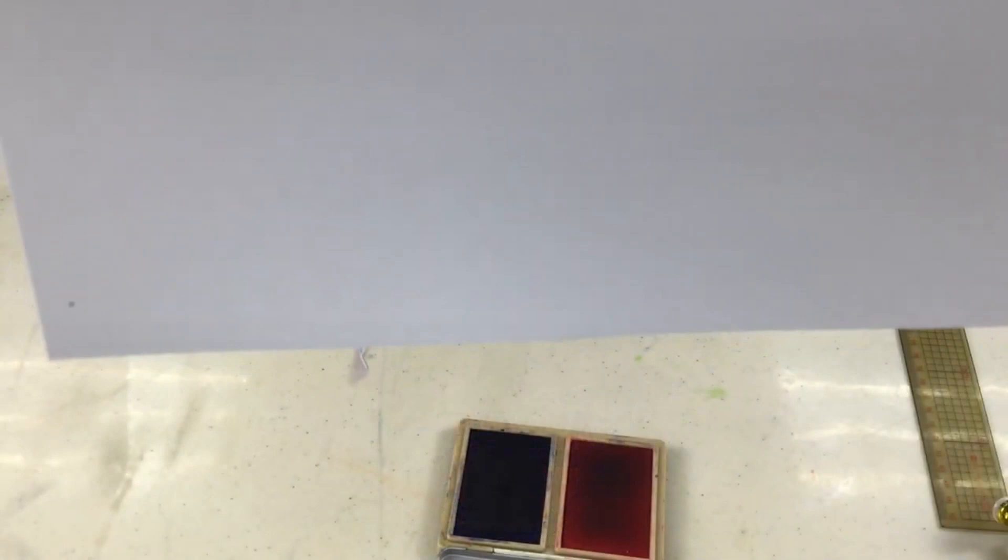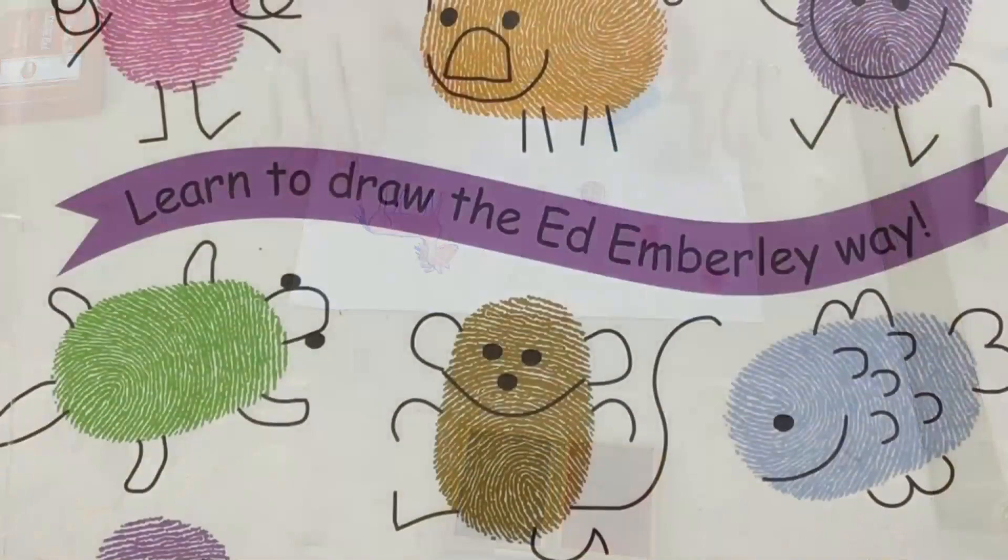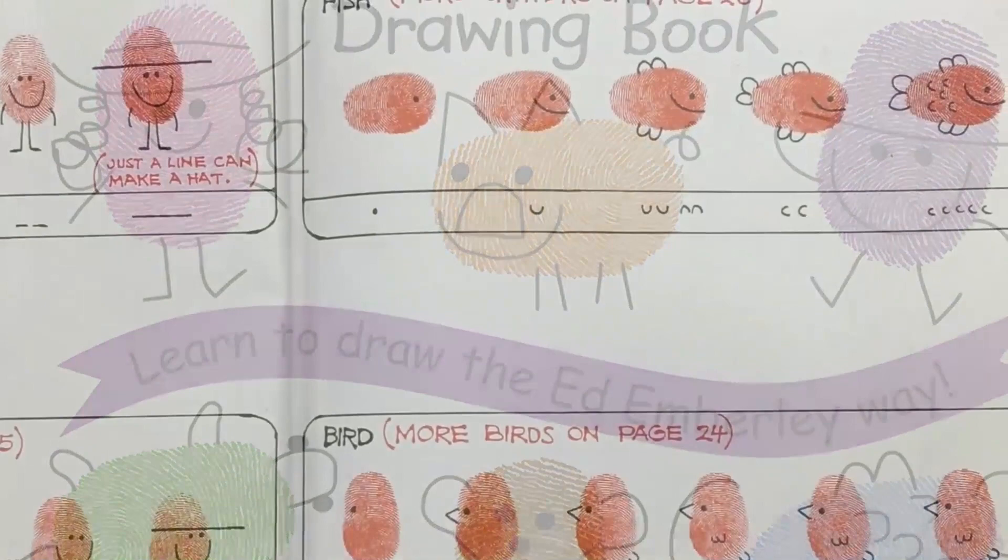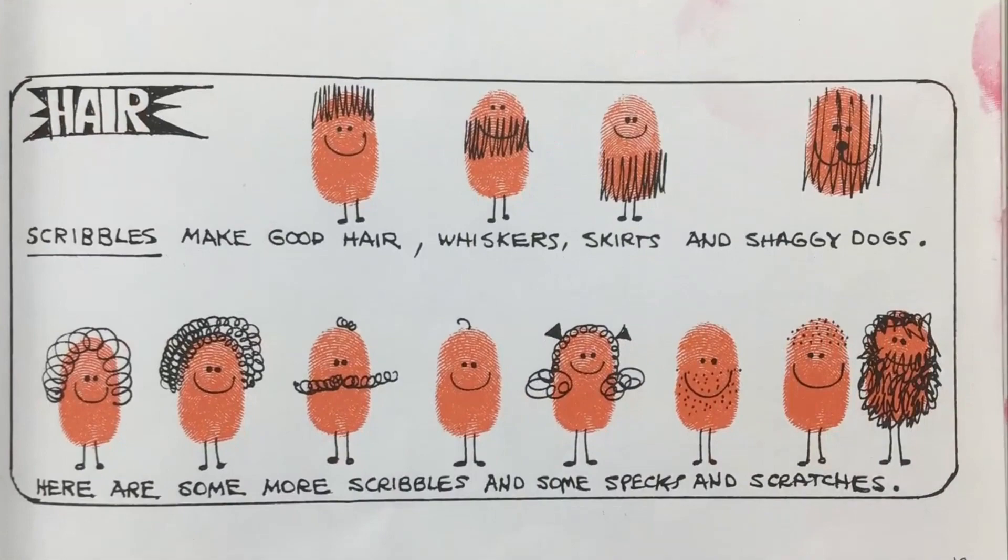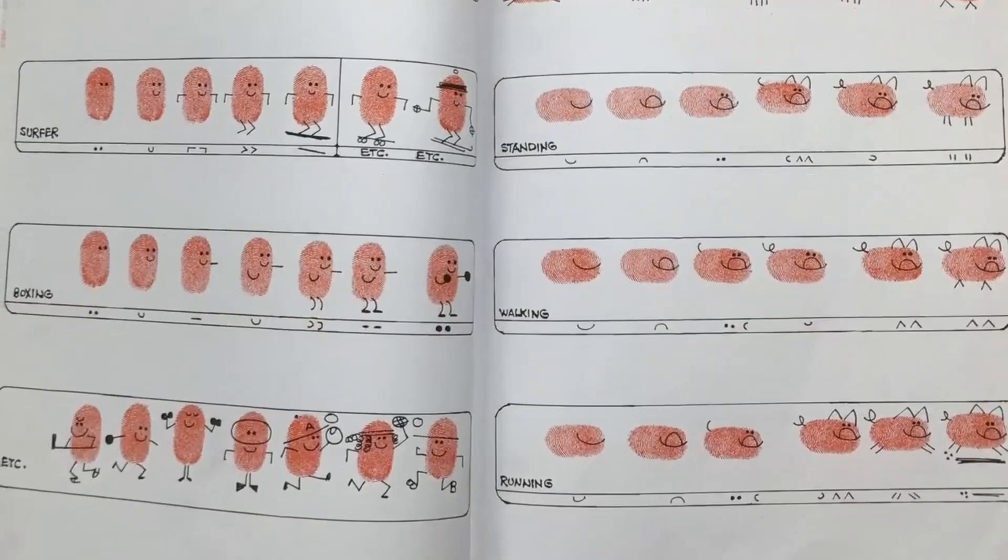I'm going to give you some other examples of fingerprint art that you can do. These are pictures from the Ed Emberly book. Here's a fish. A rabbit, a frog, and a spider. Different kinds of hair for little thumbprint people. These are fun. They look like beans.